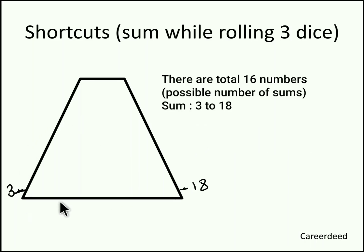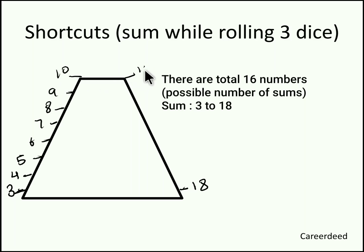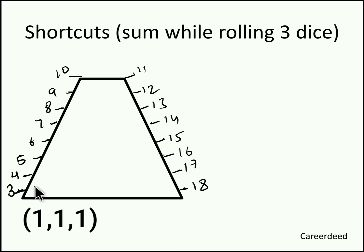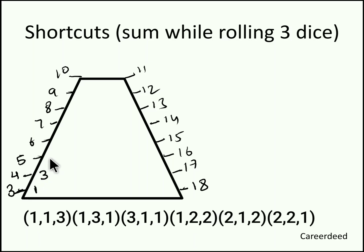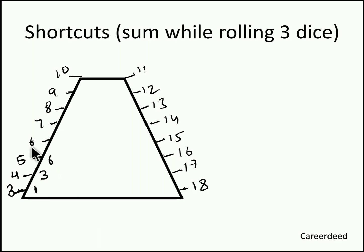Write all possible sums from 3 to 18. Sum 3 occurs 1 time, sum 4 occurs 3 times, sum 5 occurs 6 times, sum 6 occurs 10 times, sum 7 occurs 15 times, sum 8 occurs 21 times, sum 9 occurs 25 times, and sum 10 occurs 27 times.